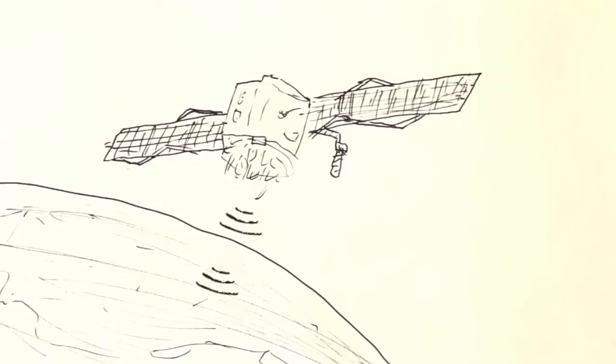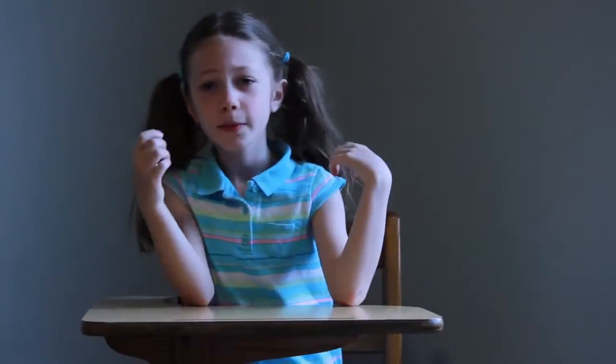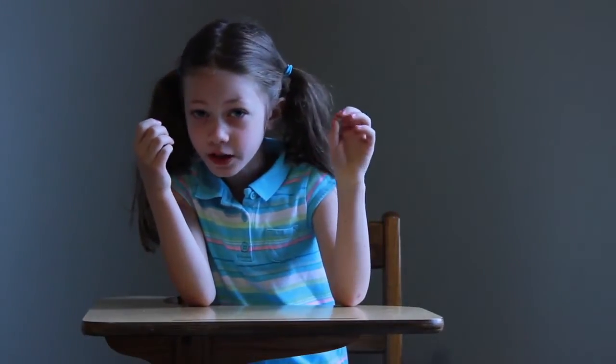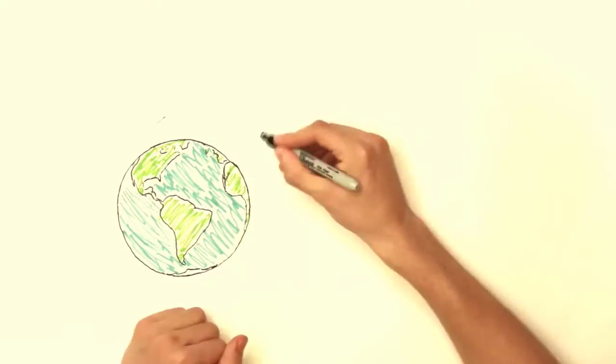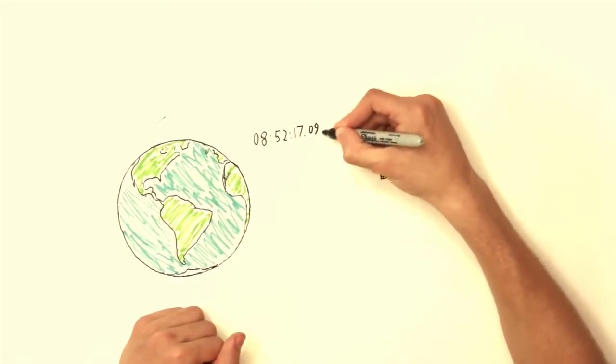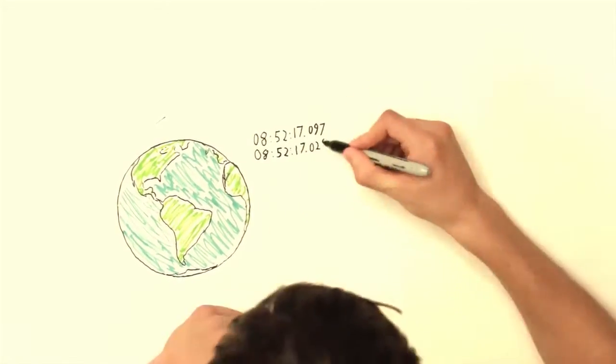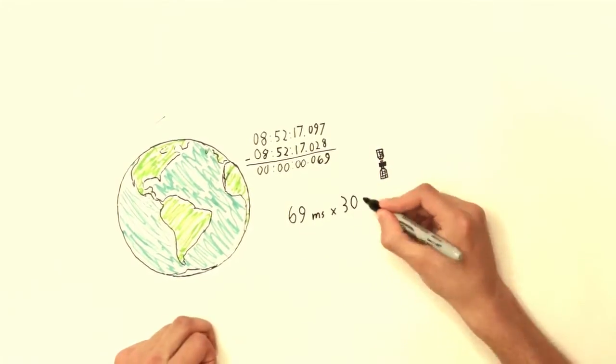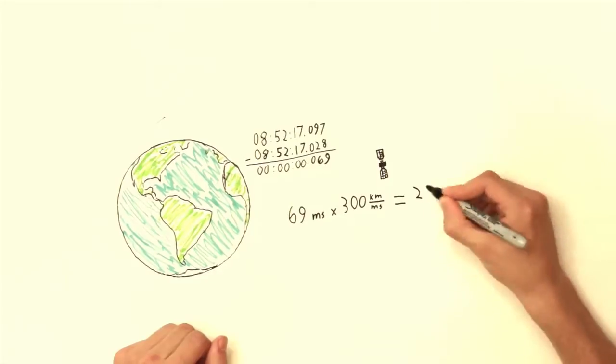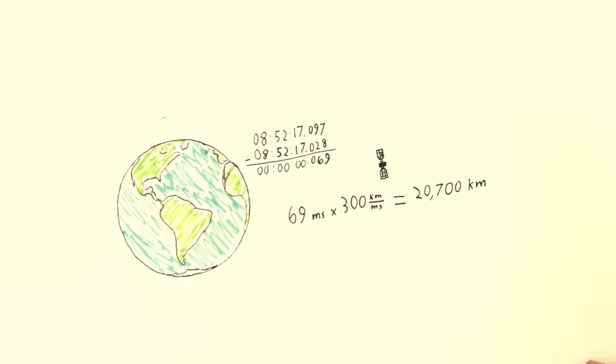Each satellite is constantly sending signals that contain the exact time the signal was sent and the satellite's position at that time. A GPS receiver uses this information to calculate its position. Let's look at this in two dimensions for simplicity. Say you're a satellite receiver. You receive a signal from a satellite for the time that is 69 milliseconds earlier than the actual time. You know that the signals travel at the speed of light, so you multiply 69 milliseconds by the speed of light, and you get your distance from that satellite.